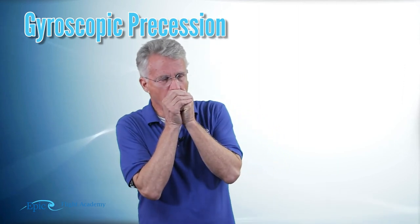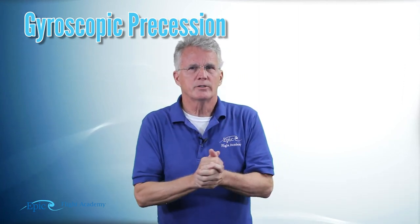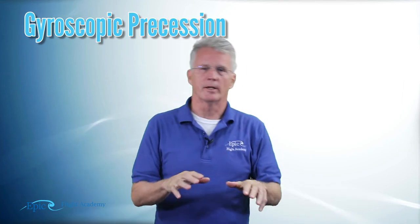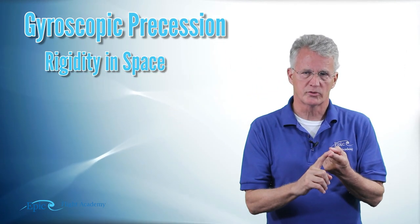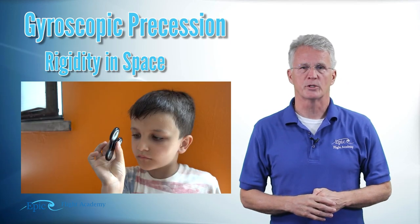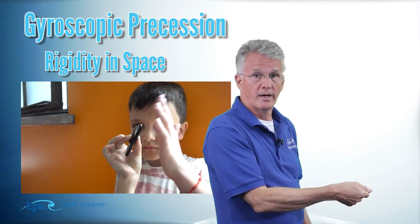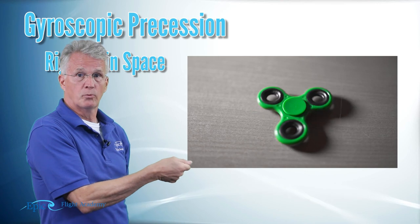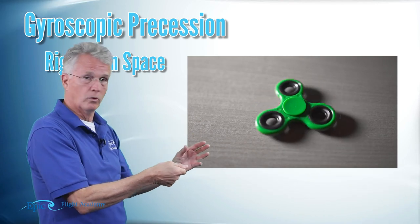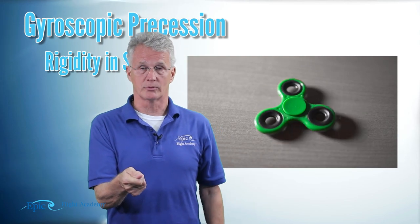The fourth turning tendency is called gyroscopic precession. To understand how it affects the airplane, we first have to understand gyroscopes. If we take a disc and spin it very rapidly, it will maintain rigidity in space — just like the toy top you played with as a child, or a bicycle wheel on an axle spun fast. Once you spin it, it tends to hold its position. That is rigidity in space. The second principle is called precession.